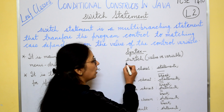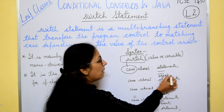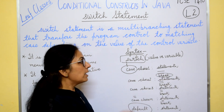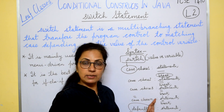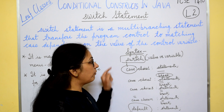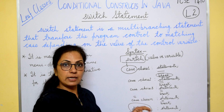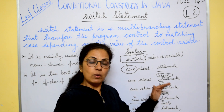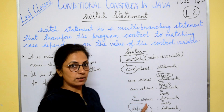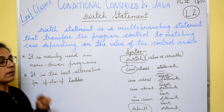Switch is a keyword and must be written in small letters. In the switch construct, there are four keywords: switch, case, break, and default. I will explain the meaning and purpose of each of these keywords one by one. Switch is mainly used in menu-driven programs.